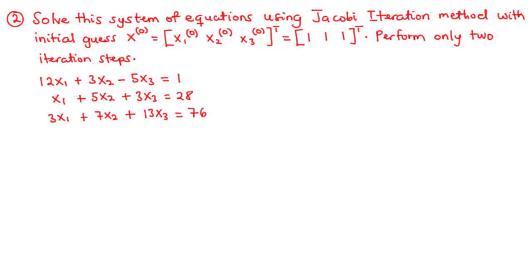In the second example, we are going to solve the system of equations using the Jacobi iteration method with initial guess x(0) = [x1(0), x2(0), x3(0)] equal to 1, 1, 1. We are also asked to perform only two iteration steps. So we have this to be the system of equations. Let's try to solve this question.